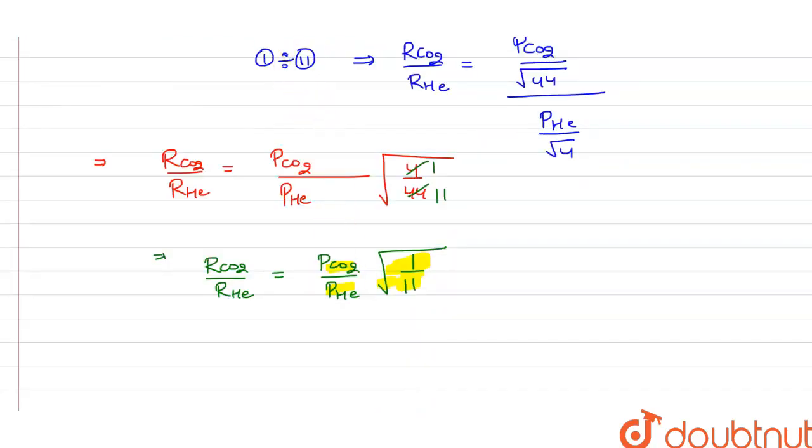We know that the rate of effusion of both gases is the same, so 1 equals pressure of CO2 divided by pressure of He times square root of 1 divided by 11.